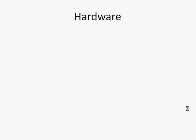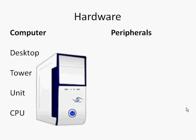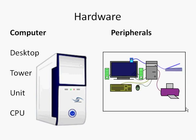A bit more about hardware. Hardware can be divided into two separate categories. First, the computer itself — the box with lots of things inside it, which we might know as a desktop or a tower. Some people even call it a CPU, but more about CPUs in another video. The other category is peripherals — things that all attach to the computer.